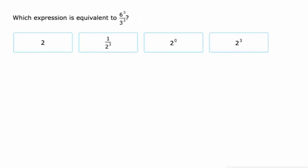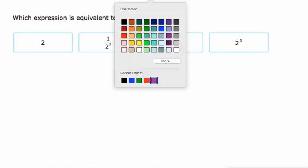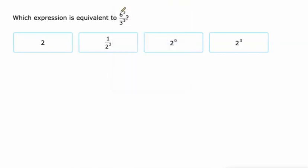This one is 2. It falls into that category. Same exponent, 3. Then we can divide the two bases. 6 divided by 3 is 2, and we keep that same exponent. There it is. Last answer choice again.